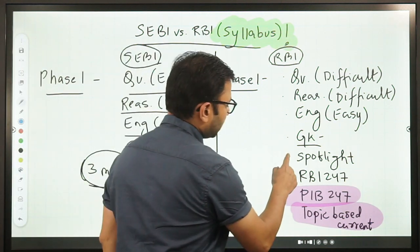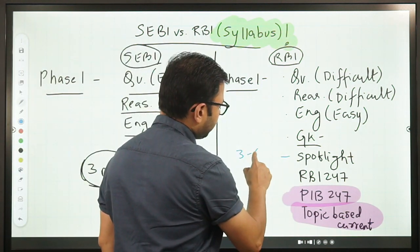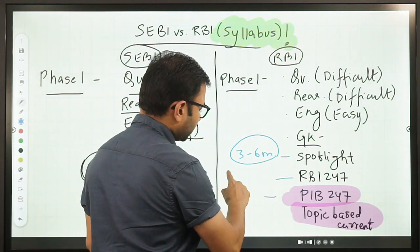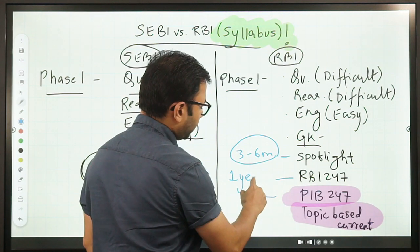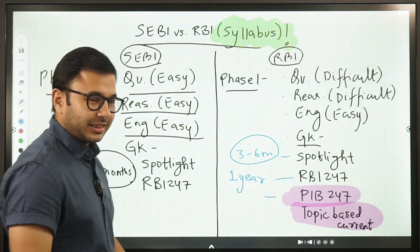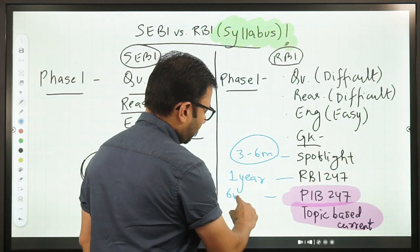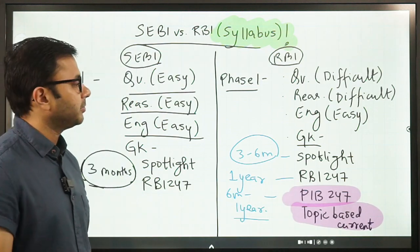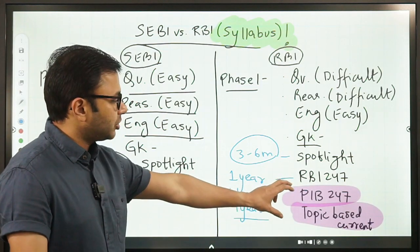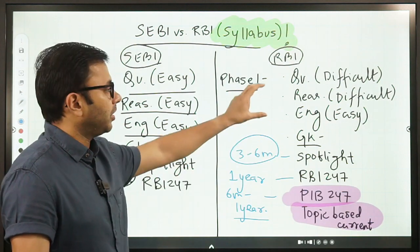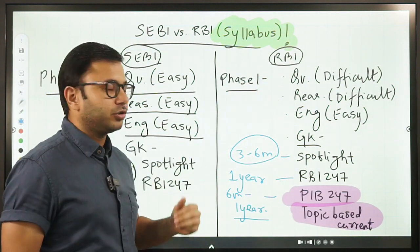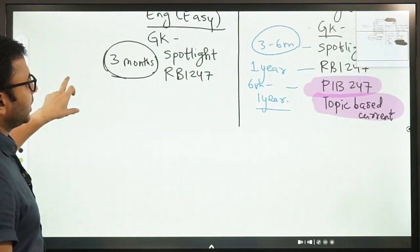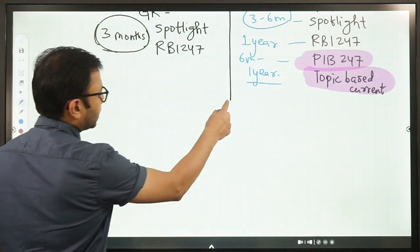Now what is also unique here is Spotlight 3 to 6 months of coverage is relevant. Similarly, RBI and PIB 247, I personally recommend one year, but minimum is six months. So six months to one year for PIB and RBI 247. Six months is the minimum, one year is the maximum that you can cover. So these are the additional areas that you have to cover. In quant and reasoning, the difficulty level also changes. Everything else remains the same. Now we understand the commonalities and differences when talking about phase one.